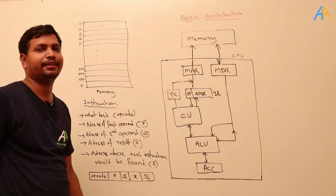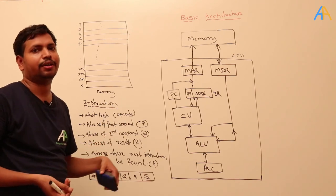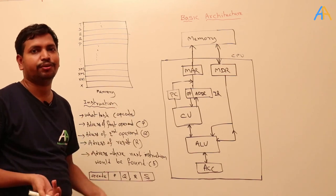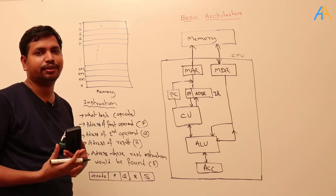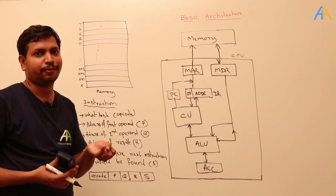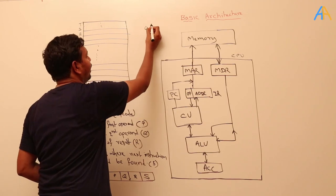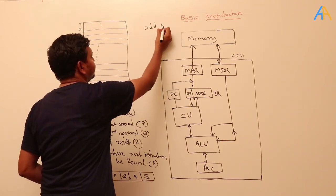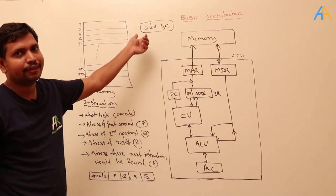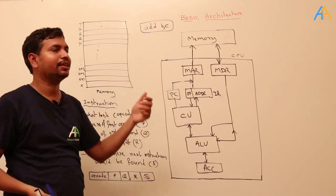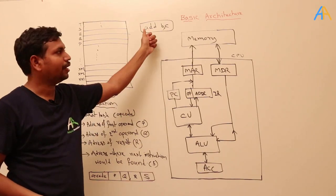Let's see more detail about how an instruction is designed. An instruction is whatever we tell the processor it should do. So what should an instruction contain? It should contain what operation has to be performed. For understanding, we'll take the ADD instruction. ADD — what it has to do is addition. So the instruction should contain what it has to do.